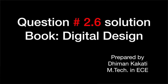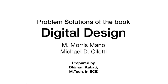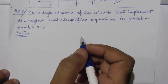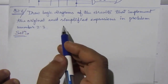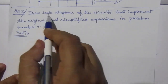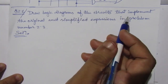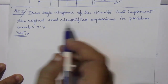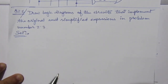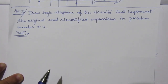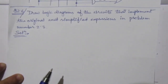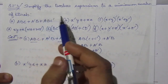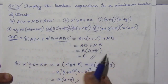Dear students, I welcome you all to this problem solution series in Digital Electronics. I am solving the problems from the book Digital Design by Maurice Mano and Michael Ciletti. In this video, I am solving problem number 2.6 from chapter number 2. Previously we solved problem number 2.3 — the link is given in the description — which finds the minimum number of literals for these expressions.